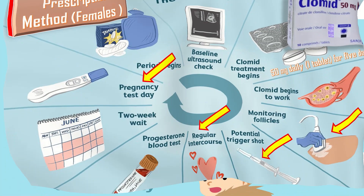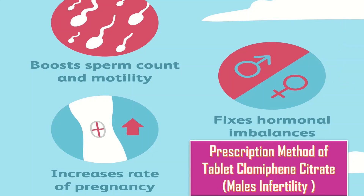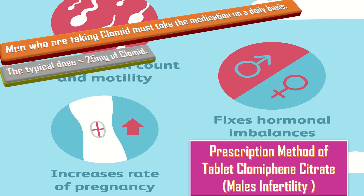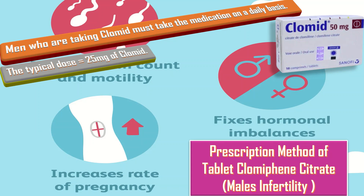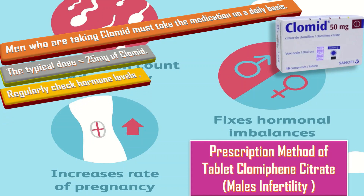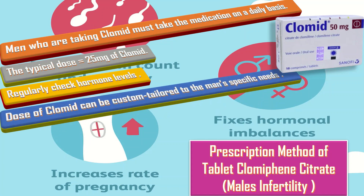Now we will talk about the prescription method of tablet clomiphene citrate for male infertility. Men who are taking clomiphene must take the medication on a daily basis because new sperms are produced every day. The typical dose is half a tablet every day — that is, 25 mg clomiphene. While on clomiphene, hormone levels will be regularly checked to confirm an adequate response to the medication, and the dose can be custom tailored to the man's specific needs based upon the lab results.